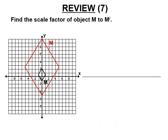What was the scale factor? Check which direction — are we going smaller or bigger? If going smaller, it's a fraction; if bigger, it's a whole number. Looking at the coordinates: zero, two goes to zero, ten — that looks like a scale factor of five. Let's double-check another point: zero, negative one goes to zero, negative five. Yes, scale factor of five.